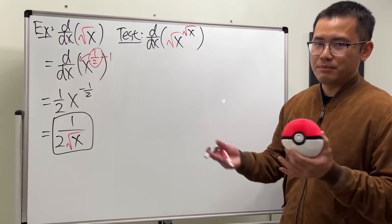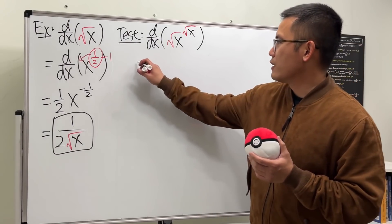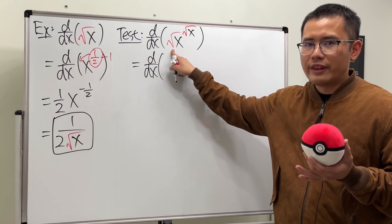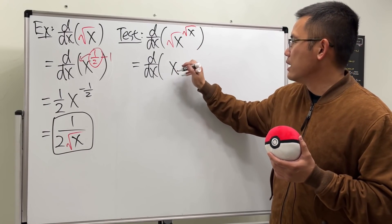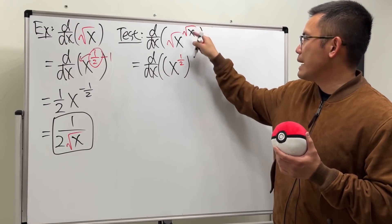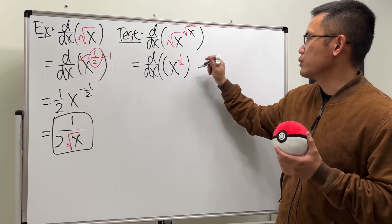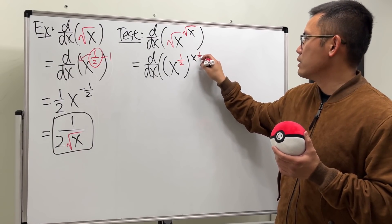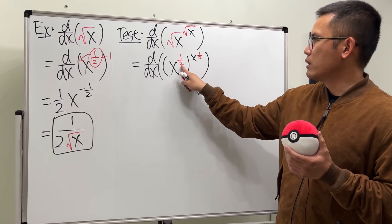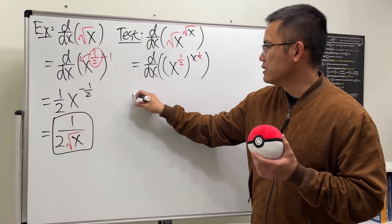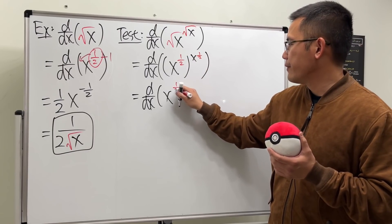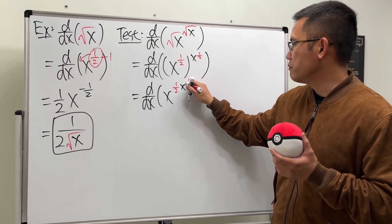Time's up. Let's see how to do that. It's still pretty similar: the square root is the one-half power, so this is x to the one-half power raised to that power, which is again x to the one-half power. Now we have this power to that power, so we can multiply the exponents together: x to the one-half times one-half.